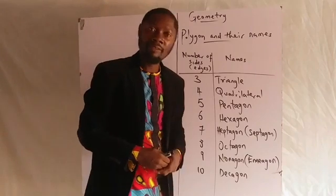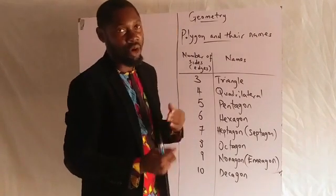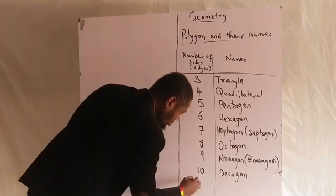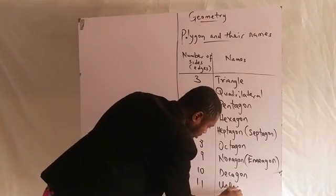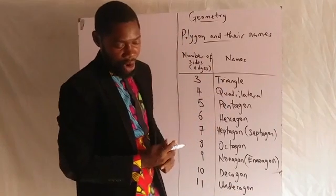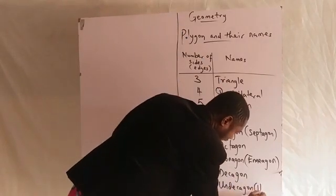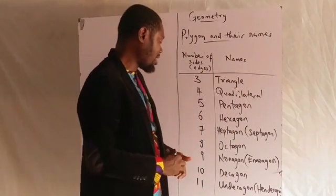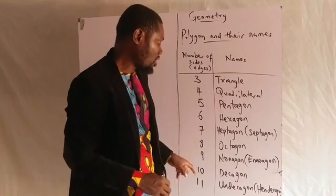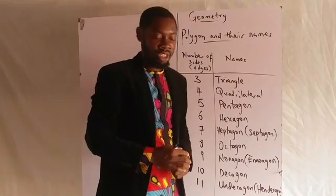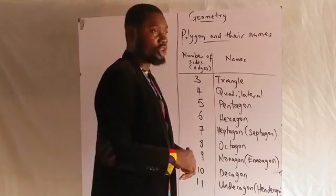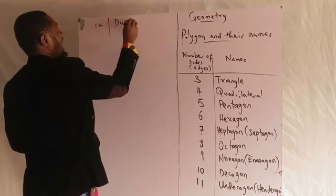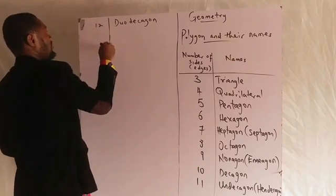We also have names for eleven sides, twelve sides, and up to even one million sides. The eleven-sided shape is called undecagon. The twelve-sided shape is called duodecagon. Twelve-sided shape is called the duodecagon.